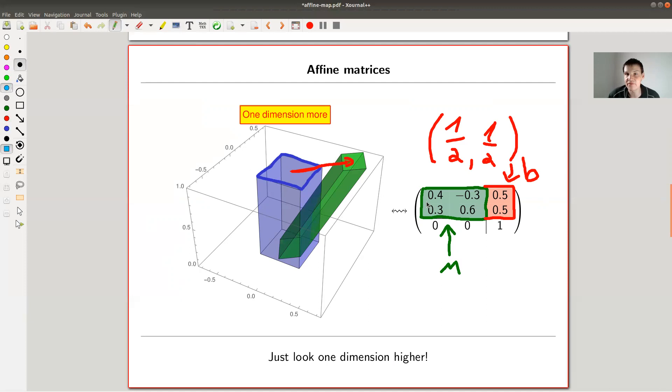And the way it works, as I said, is you have this matrix M that you put in the upper left. You have the vector B, the translation vector, that you put in the upper right. And you add an extra row, which is exactly this extra dimension you add. And it's always this one. So just look one dimension higher. That's exactly what it should do.